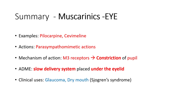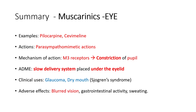Pilocarpine is used in both narrow and wide angle glaucoma and for dry mouth — for example in Sjögren's syndrome. Adverse effects include blurring of vision from M3 receptor activation on ciliary muscles. Topical use causes minimal systemic effects due to poor absorption, but oral tablet use can lead to increased gastrointestinal activity and sweating.